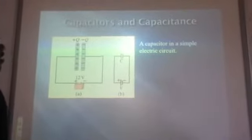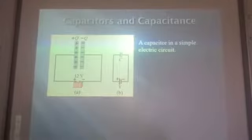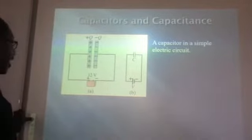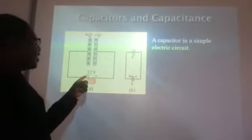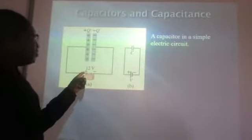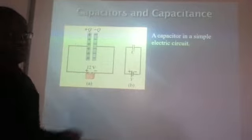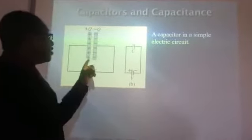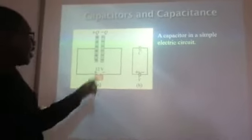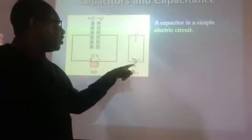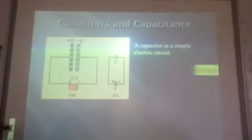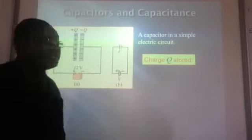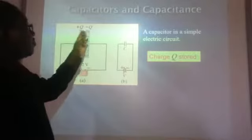Capacitors in electronic circuits are represented in the form of two parallel lines. The plate connected to the positive terminal of the battery will accumulate positive charges, and the side connected to the negative terminal of the battery will accumulate negative charges. The charge stored is given the symbol Q, so we have plus Q on one side and minus Q on the other.